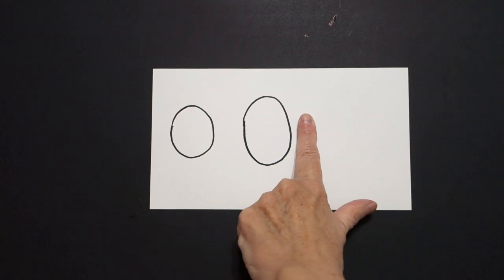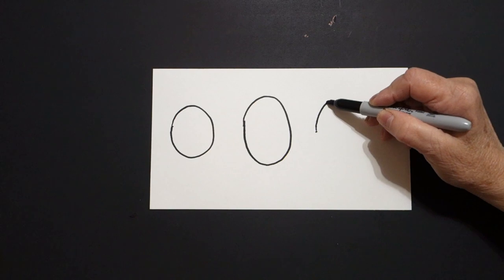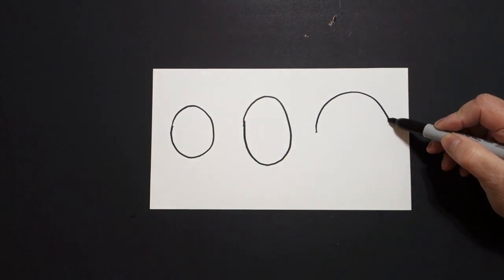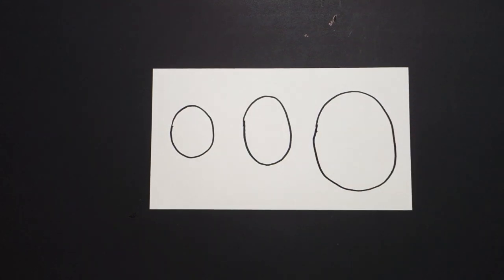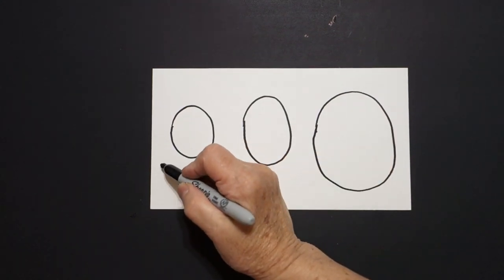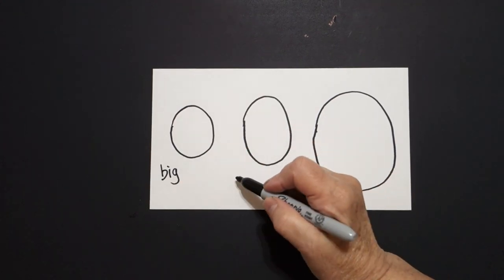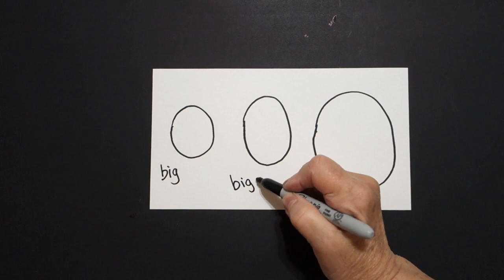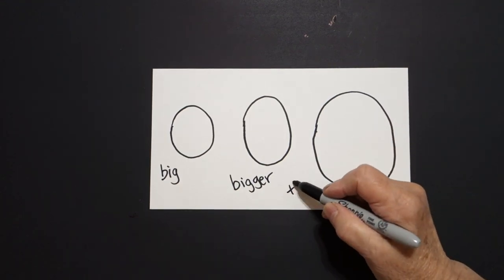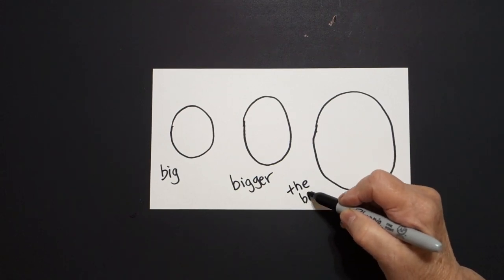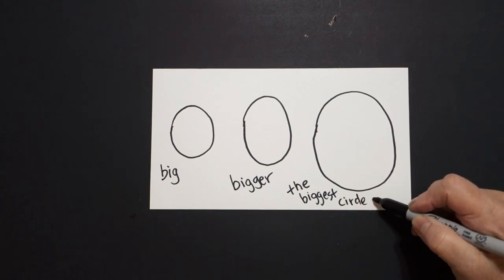I take one finger again and I put a dot. And now I draw a big curve line up, down, over, up, connect. This is a big circle. But this is a bigger circle, and this is the biggest circle of all.